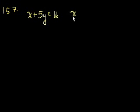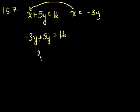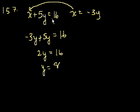Problem 157. If x plus 5y equals 16, and x equals negative 3y, then what does y equal? Let's substitute. We get negative 3y plus 5y equals 16. Add those together, you get 2y equals 16, or y equals 8. That's choice E.